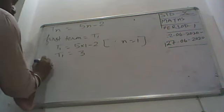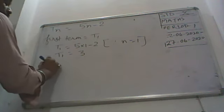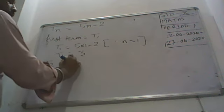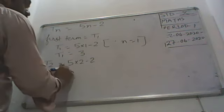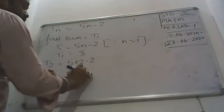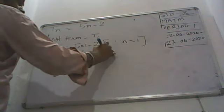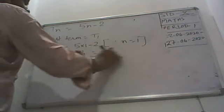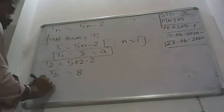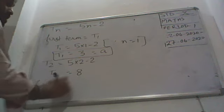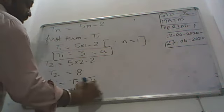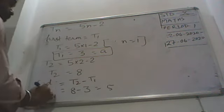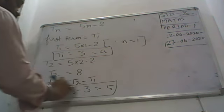Then we have to find T2 here, that is 5 into 2 minus 2, that is T2 is equal to 8. And first term is 3, so we have got first term. Now for the second, common difference, always remember common difference is equal to T2 minus T1. So that is 8 minus 3 is equal to 5. We have found our common difference also.